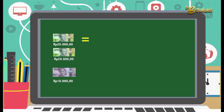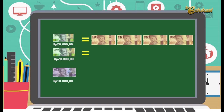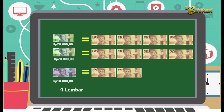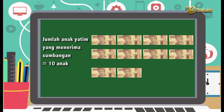Langkah-langkahnya: uang 20.000 rupiah bisa dibuat dalam bentuk 5.000 rupiah ditambah 5.000 rupiah ditambah 5.000 rupiah ditambah 5.000 rupiah. Uang 10.000 rupiah bisa dalam bentuk 5.000 rupiah ditambah 5.000 rupiah. Jadi, banyaknya uang 5.000-an: 4 lembar ditambah 4 lembar ditambah 2 lembar sama dengan 10 lembar untuk 10 anak. Kesimpulannya, maksimal jumlah anak yatim yang menerima sumbangan adalah sebanyak 10 anak.